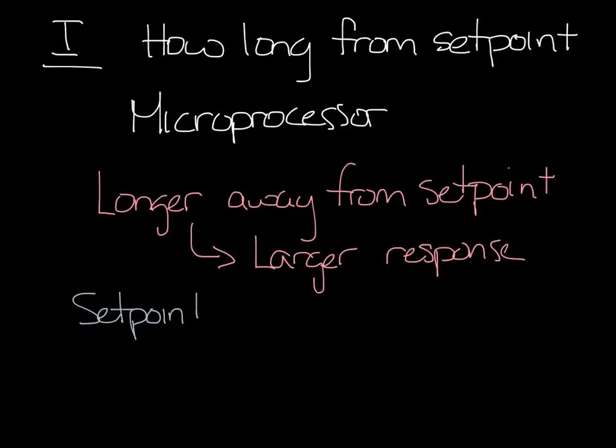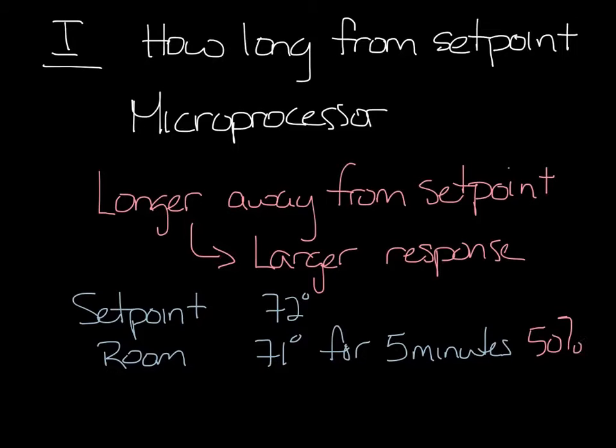So if your setpoint is 72 degrees, and the space temperature has been 71 degrees for 5 minutes, maybe you get a 50% heater output. But if the space has been 71 for a long time, which may mean that the 50% heater output isn't enough to warm the space, maybe now you get 100% output, because the controller is trying to increase the heat output to achieve setpoint.